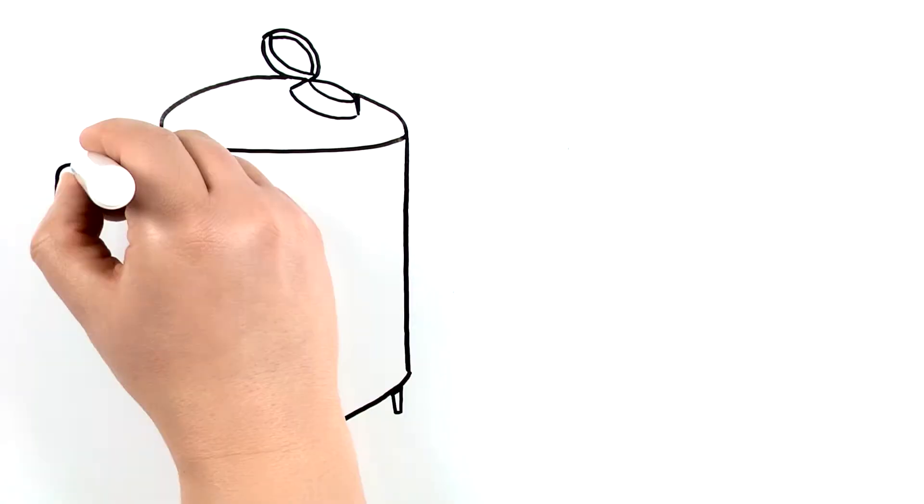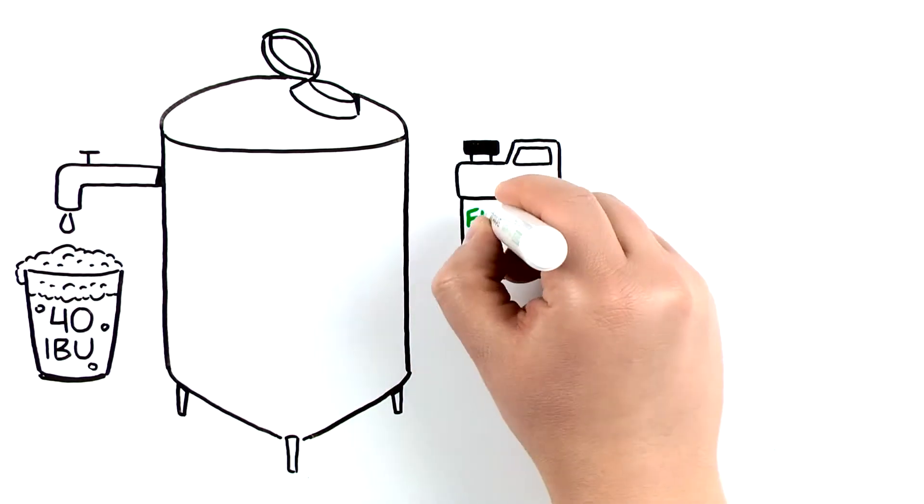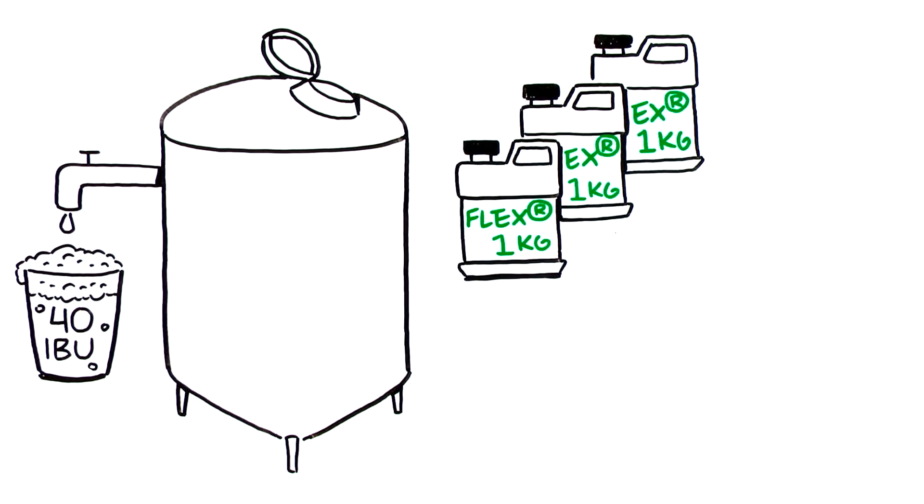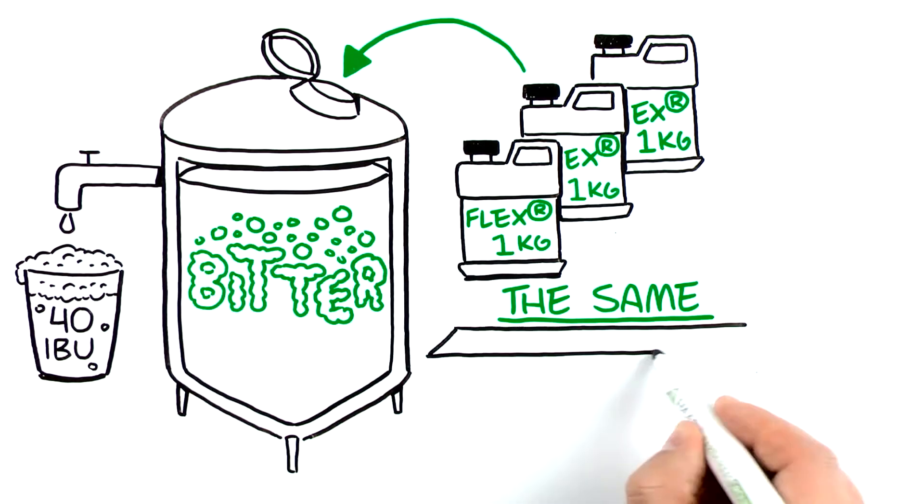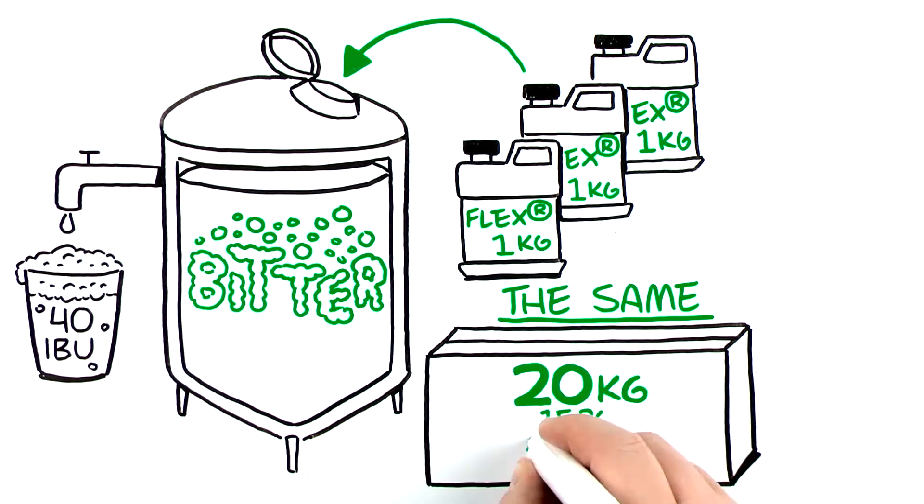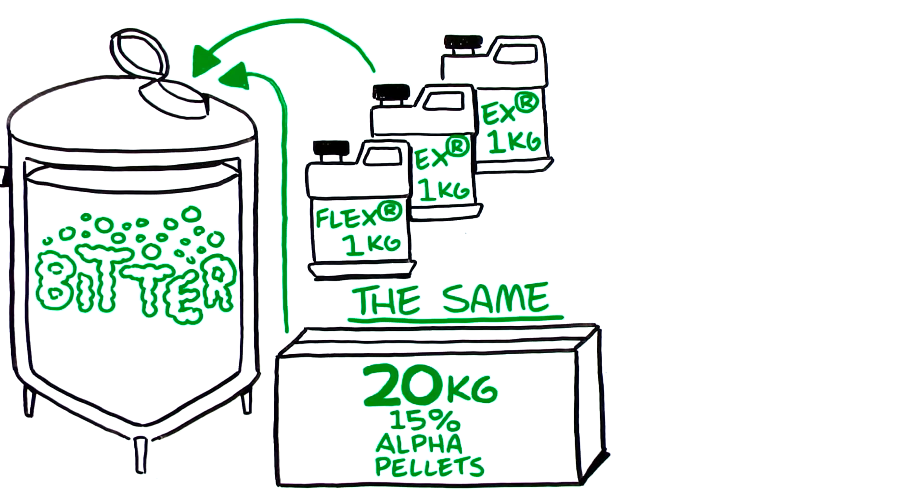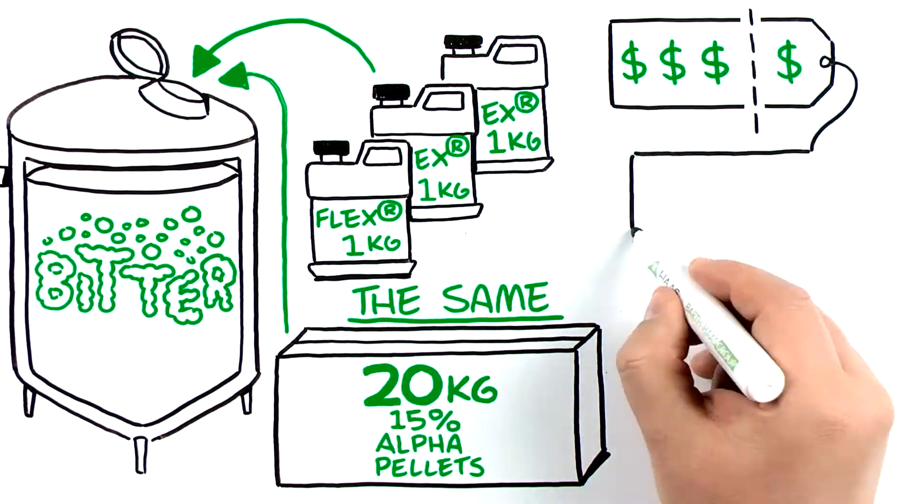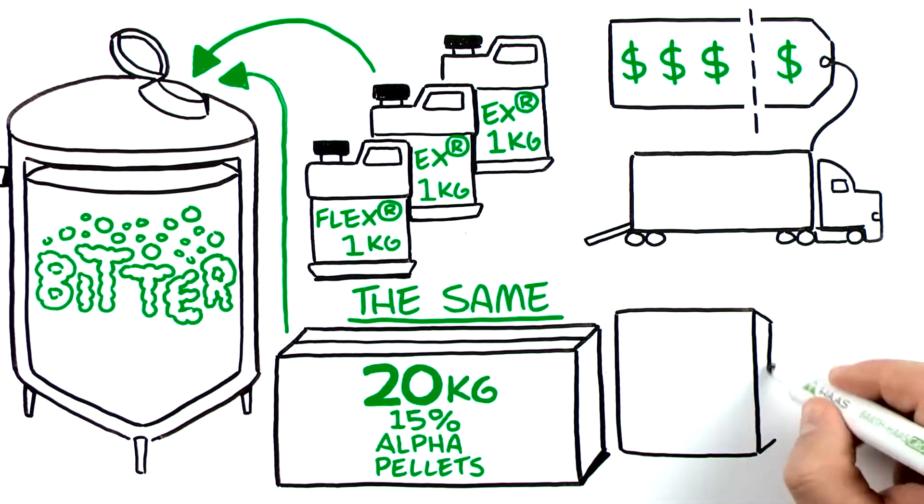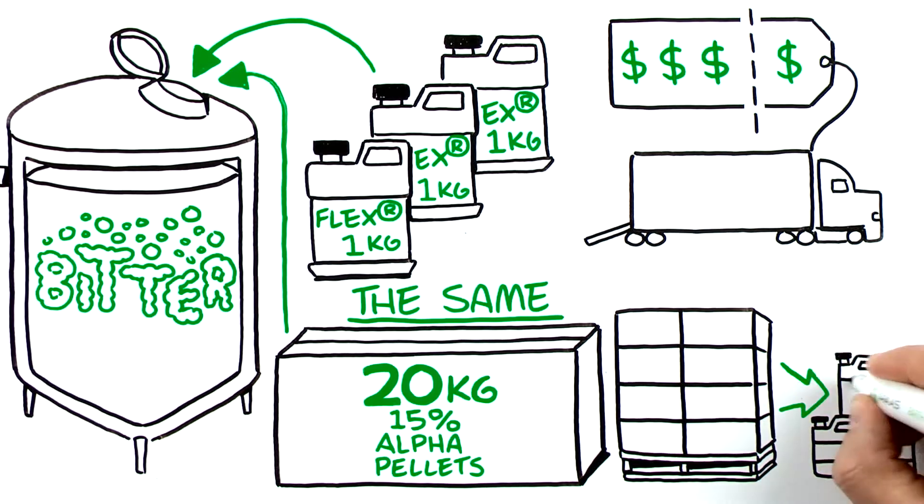If you want to brew a 40 IBU beer, three one-kilogram jugs of FLEX provides you the same bittering power as a 20-kilogram box of 15 percent alpha pellets. You'll pay up to 75 percent less in shipping costs. Plus you'll free up valuable storage space in your brewery.